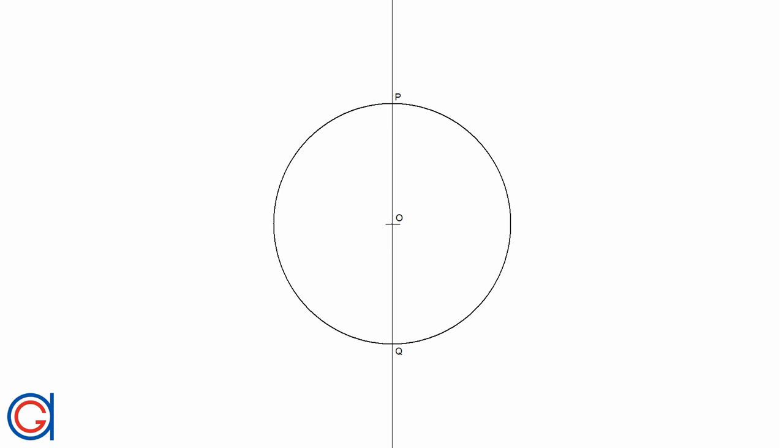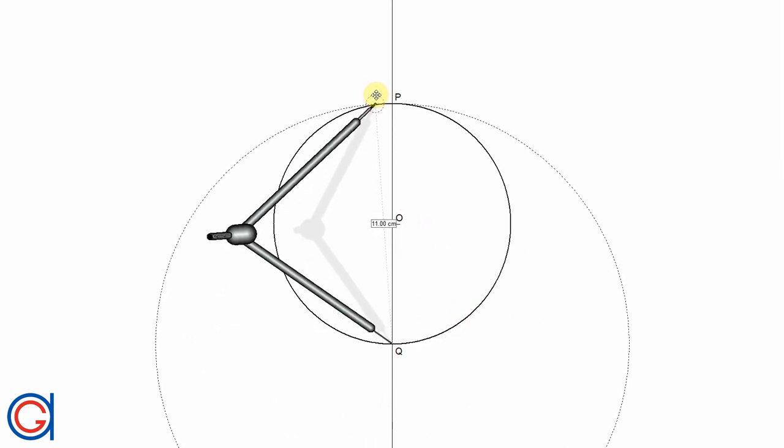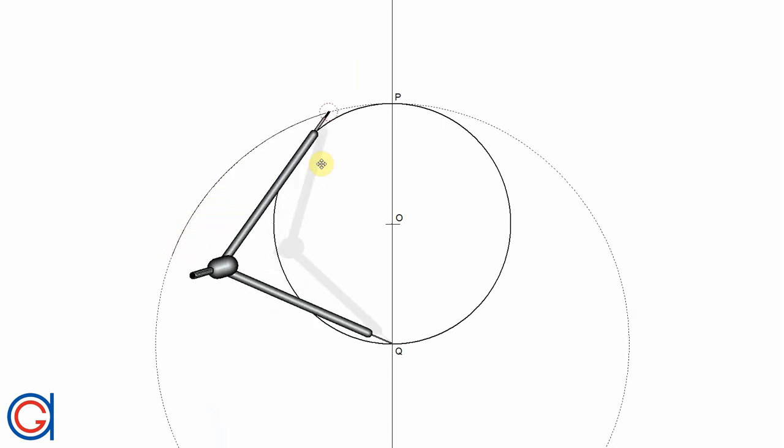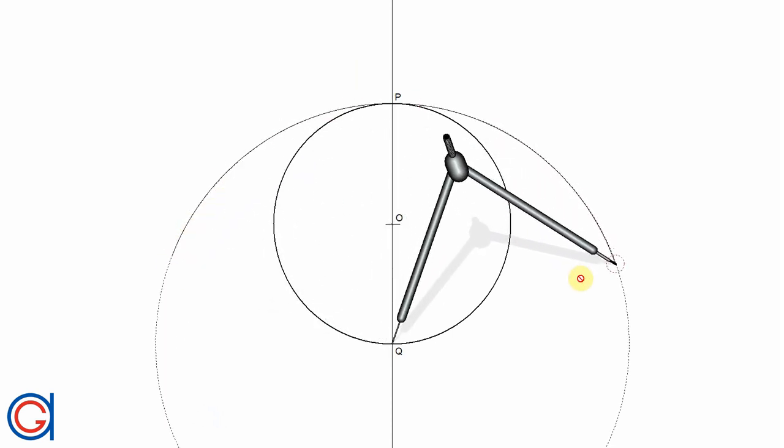This vertical diameter cuts the circumference at two points we will call P and Q. So the next step is setting our compass to the length of the diameter PQ. We are going to scribe a semicircle.